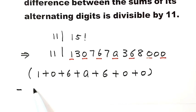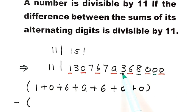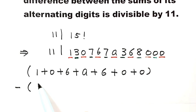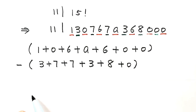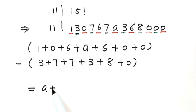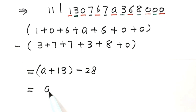Then minus the digits in even places: 0, 0, 8, 3, 7, 7, 7, 7, 3. The sum of the digits in even places is 3 plus 7 plus 7 plus 7 plus 3 plus 8 plus 0. Simplifying the first part gives a plus 13, then minus the second part equals 28, which simplifies to a minus 15.